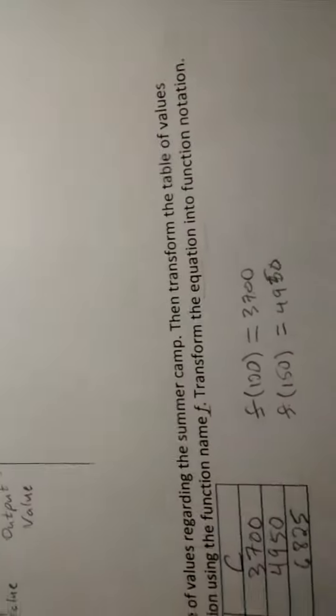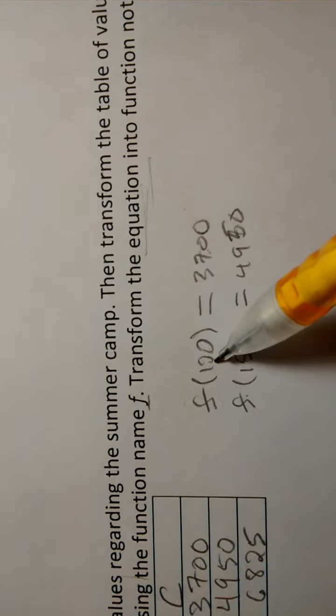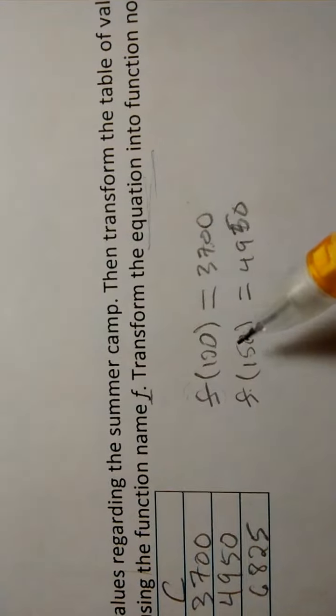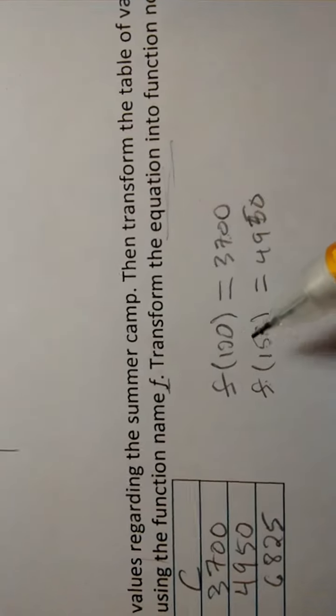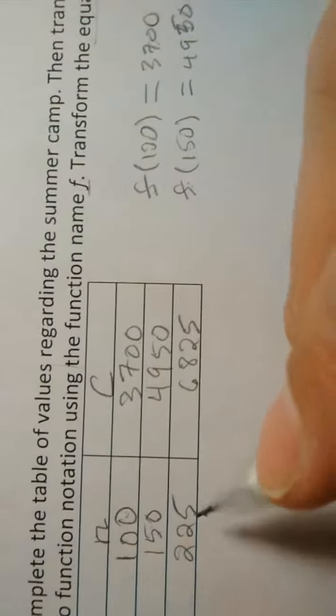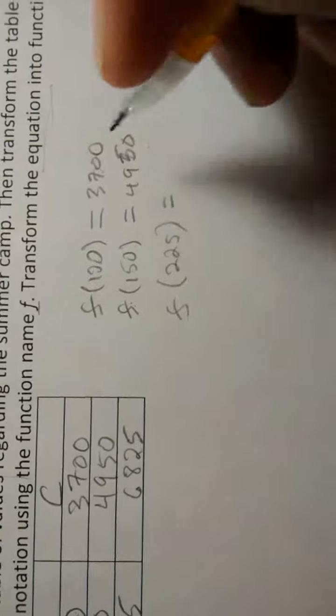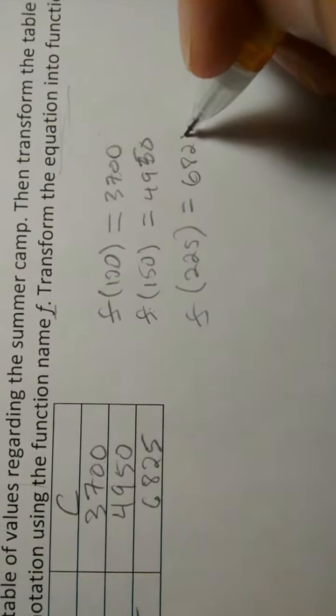Okay, so in English, though, if you were to read this in a sentence, this is pronounced F of 100 is 3,700. F of 150 is 4,950. So that's how you would write that. And then the last row of information, F takes 225 and assigns it to 6,825.